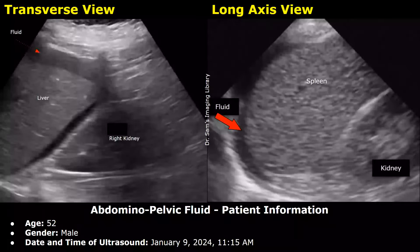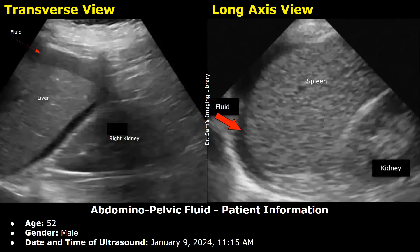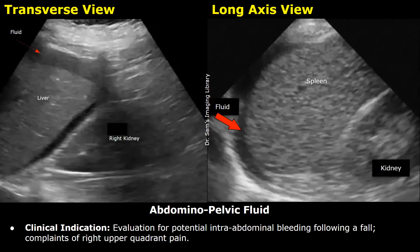Here is another case of abdominal/pelvic fluid. The patient is 52 years old, male. Date and time: January 9, 2024, 11:15 AM. Clinical indication: evaluation for potential intra-abdominal bleeding following a fall, with complaints of right upper quadrant pain.